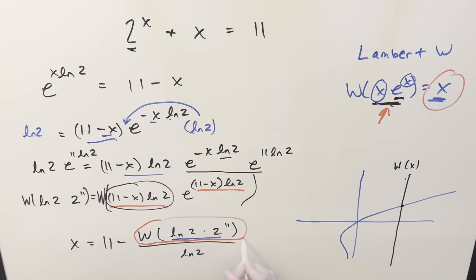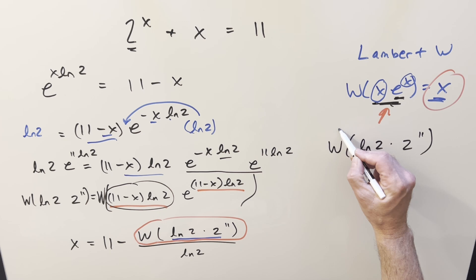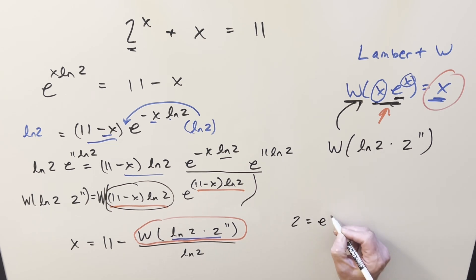If we can simplify this, maybe we can get a better answer for x. So now for this thing right here, what I want to do again is can we use the formula again and get this to work? Well, we can create the e because we can do the same thing we did before and write 2 as e to the ln 2.